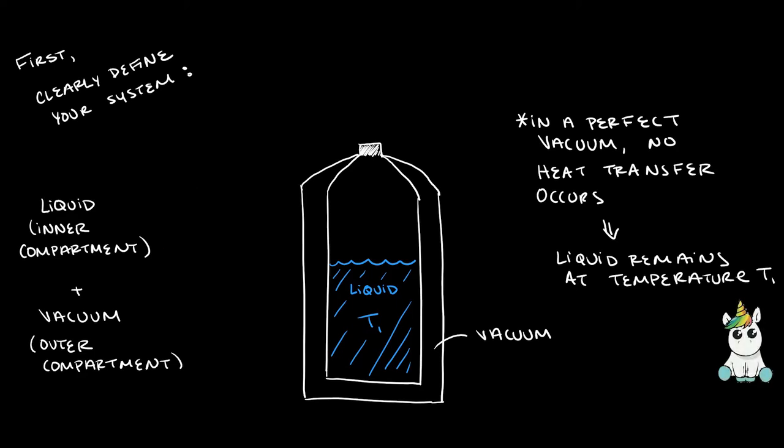The liquid is at a certain temperature T1. The vacuum prevents heat transfer due to convection and conduction, because convection transfers energy via mass motion and conduction transfers energy through collisions of particles of the same material.